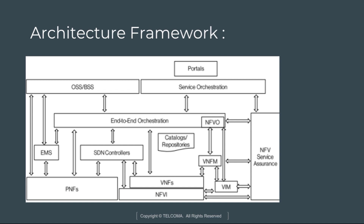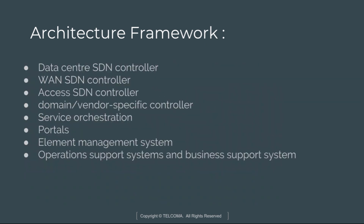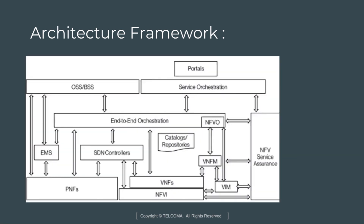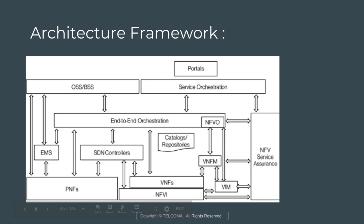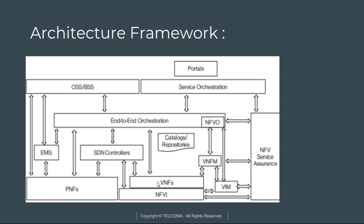Let's start with NFVI. These are all the units of the architecture framework with their performance. NFVI stands for Network Function Virtualization Infrastructure — it includes all hardware and software components on which virtualized network functions are deployed. The next unit is VNF, Virtual Network Function, which is the software implementation of a network function capable of running on the infrastructure.